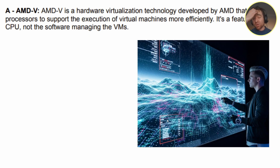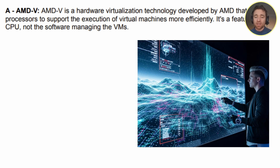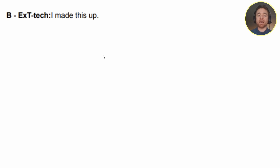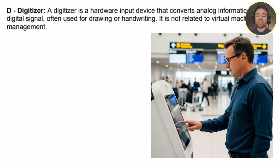AMD-V is the component of AMD CPUs that enables virtual machines. If you have an AMD processor, you need to check that AMD-V is enabled for that CPU; otherwise you simply won't meet the minimum requirements to run a virtual machine. EXT Tech — that was made up, absolute nonsense. And a digitizer is a completely separate hardware input device that converts your touches on a screen into input the computer understands, essentially allowing you to use a touchscreen.